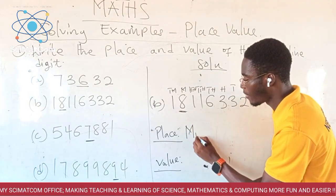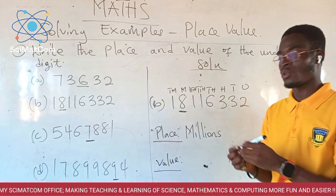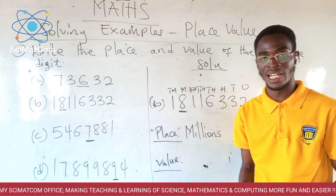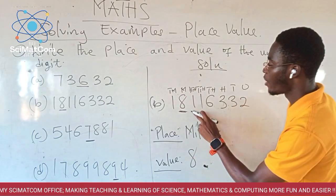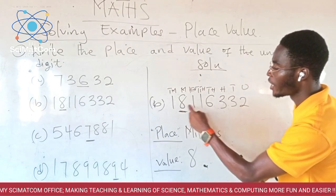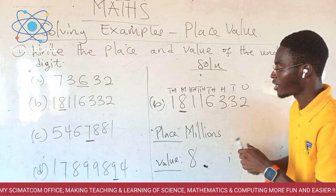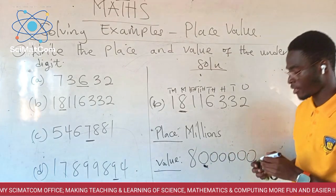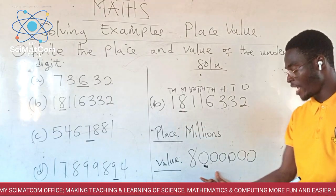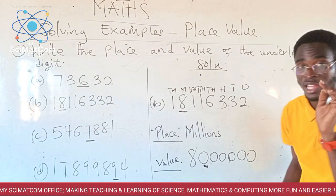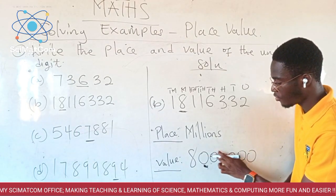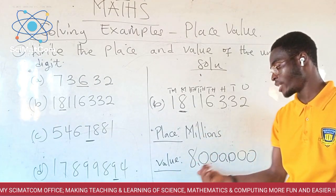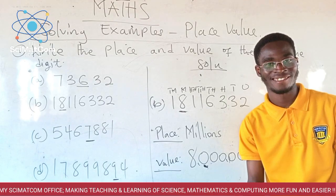The place of eight is ten million. So you write ten millions. Now what is the value of eight? Because it is in the ten millions place, the value is eight million — you write the eight and then add six zeros. We can put a comma after every three digits. So the value of this eight is 8,000,000. The place is ten million; the value is eight million.